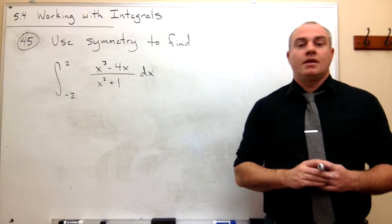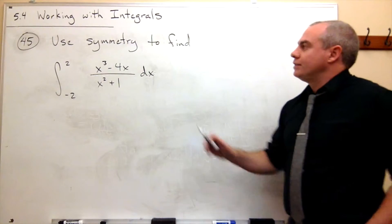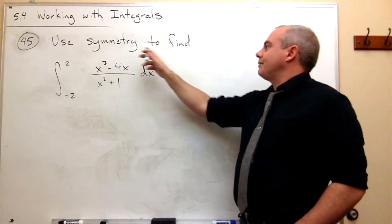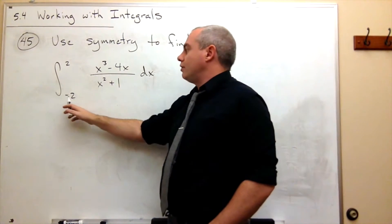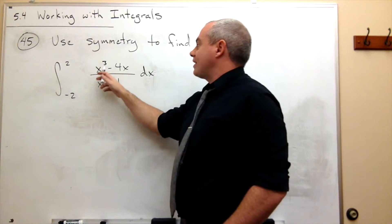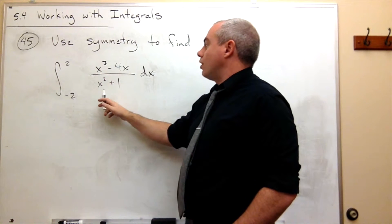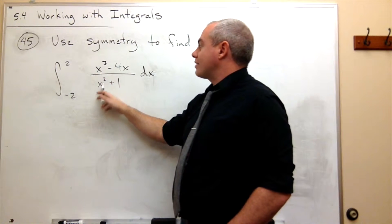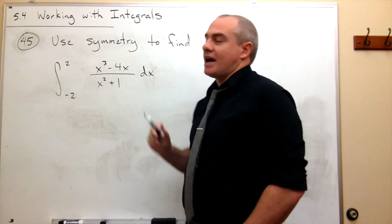I'm the calculus professor and today we'll be talking about working with integrals. In number 45, we'd like to use symmetry to find the integral from negative 2 to 2 of x cubed minus 4x over x squared plus 1, dx.